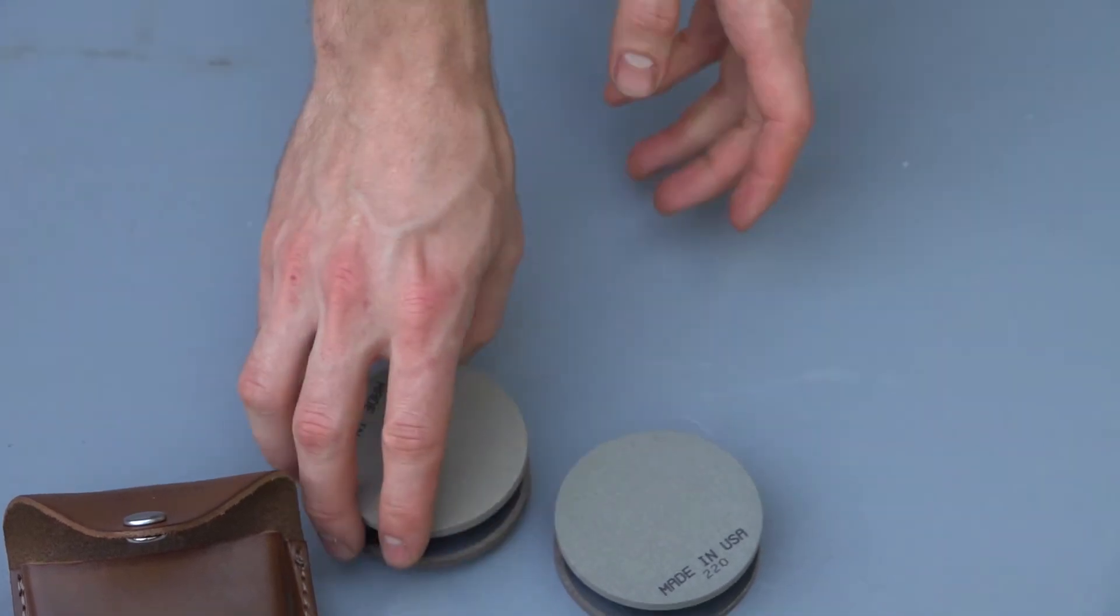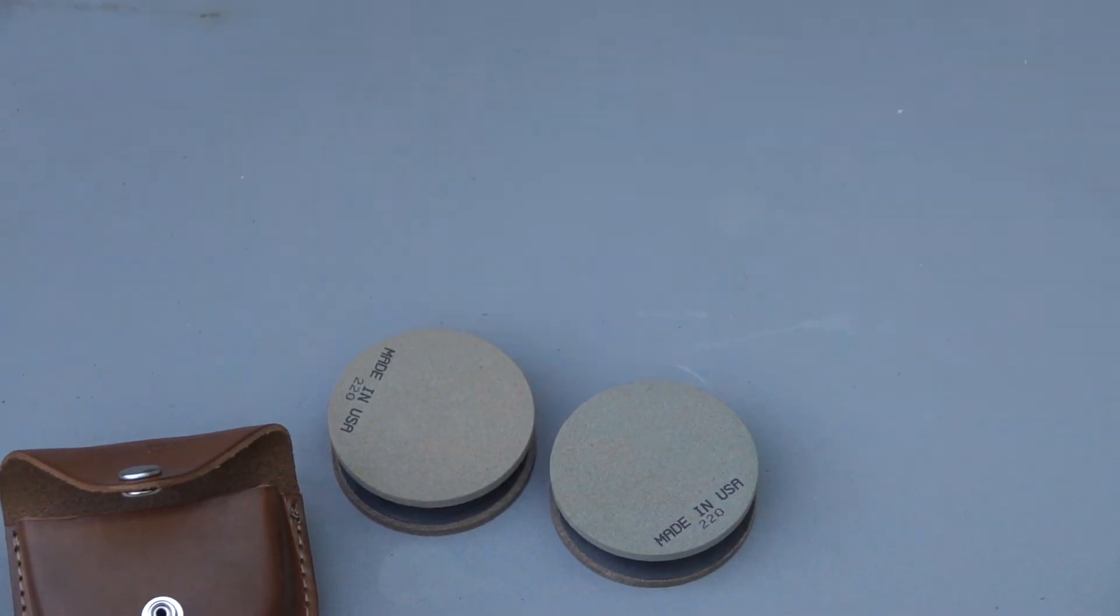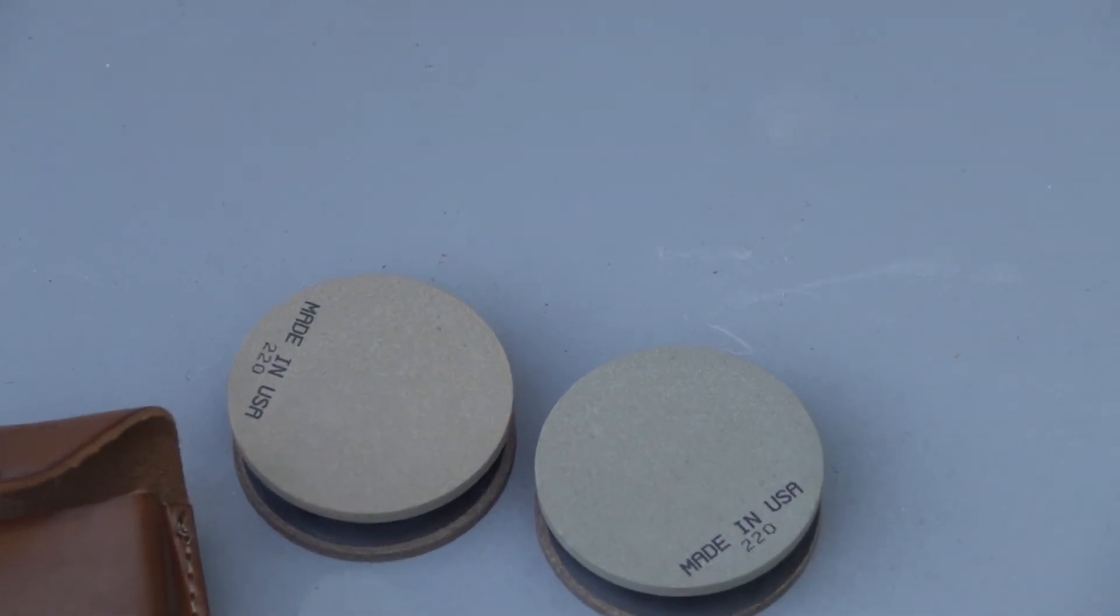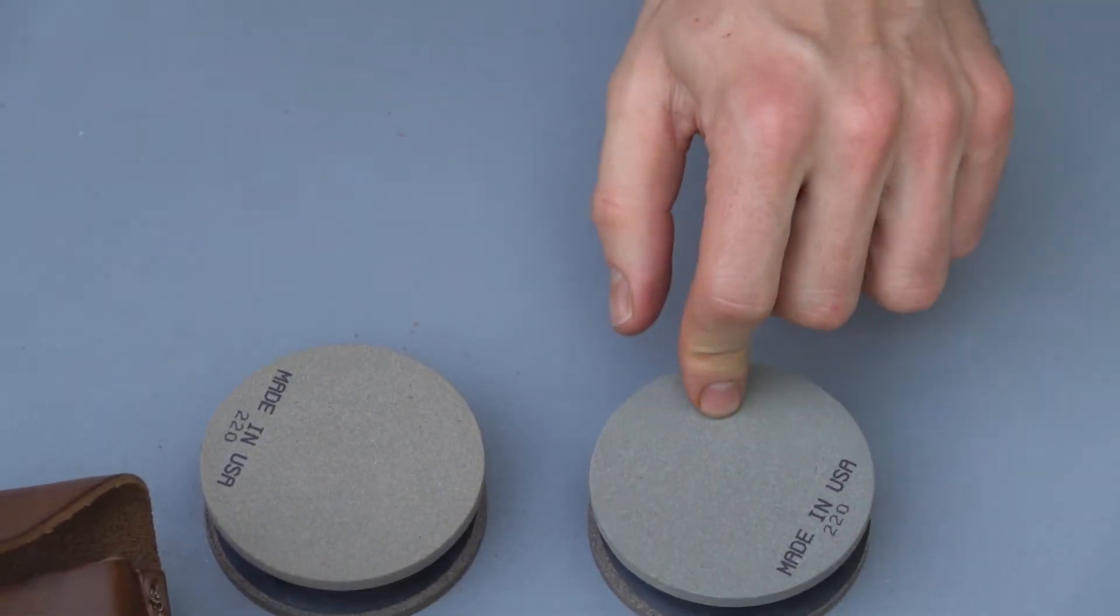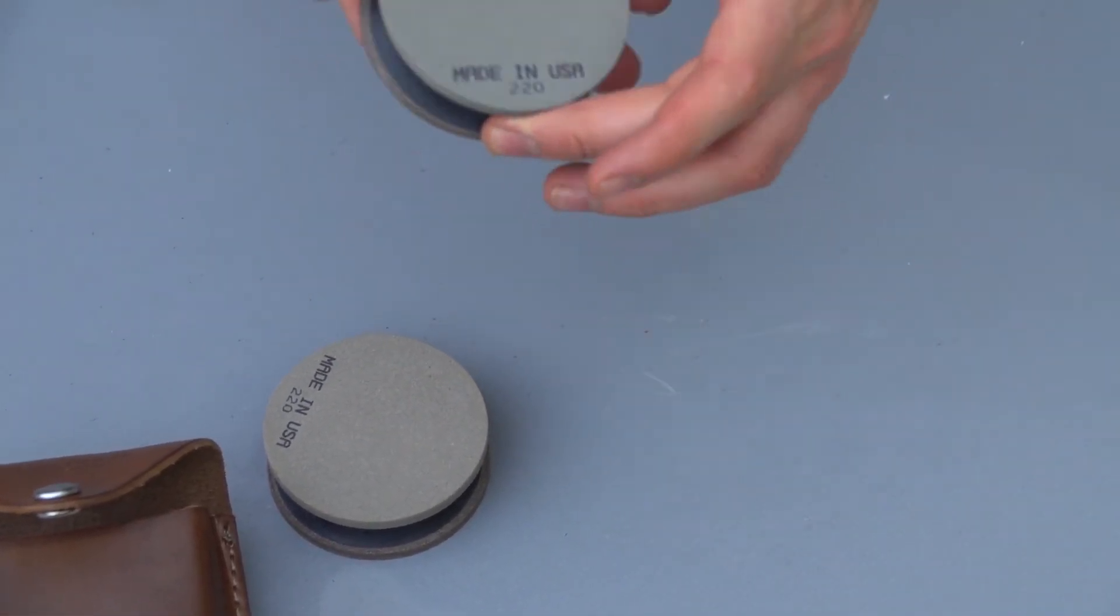These are also made in the USA, and these are made by Straight Grain Supply. You have two grits - on this side it's 220, as it says, and on this side it's 80 grit.